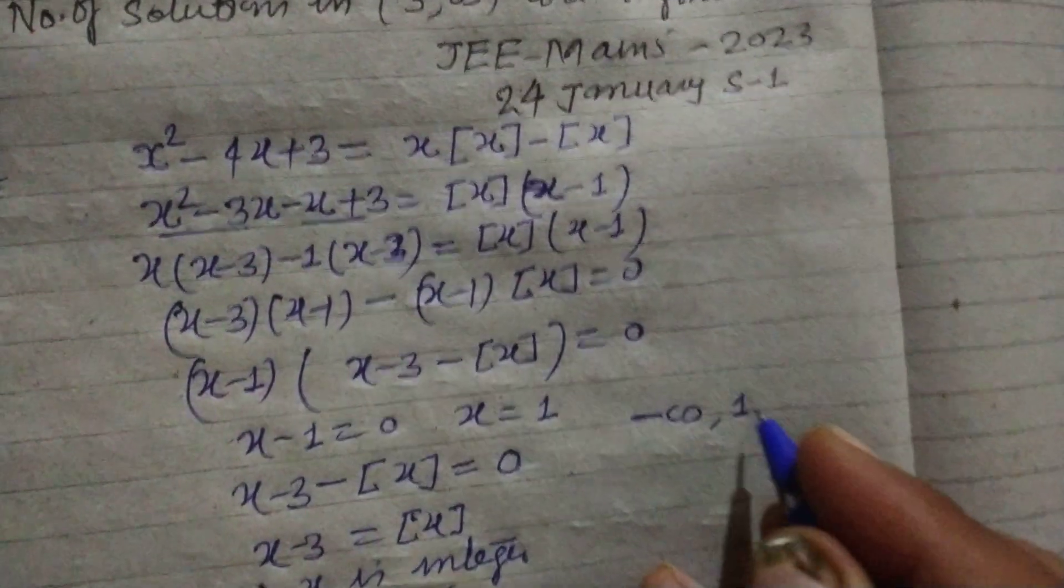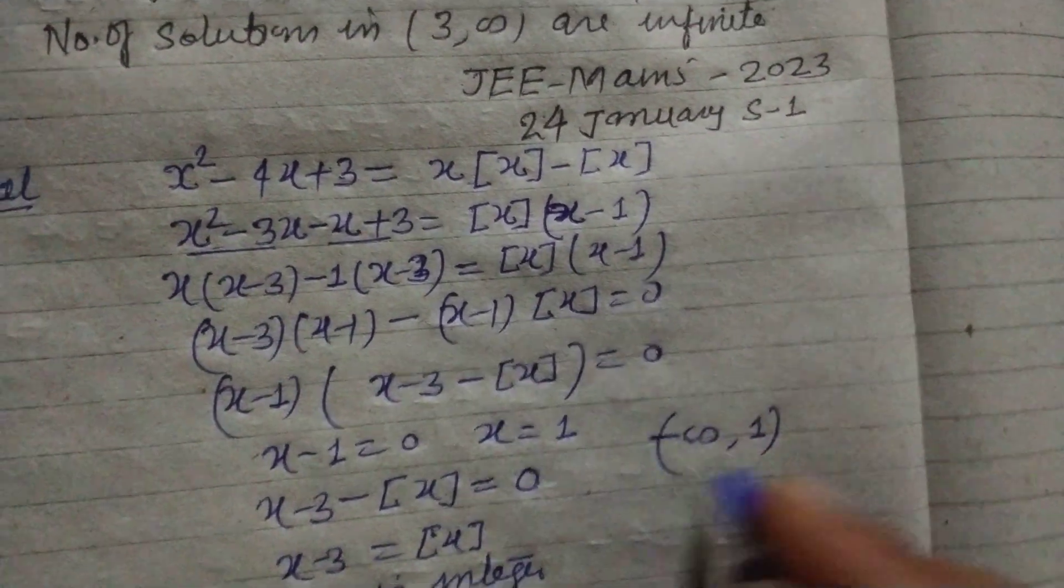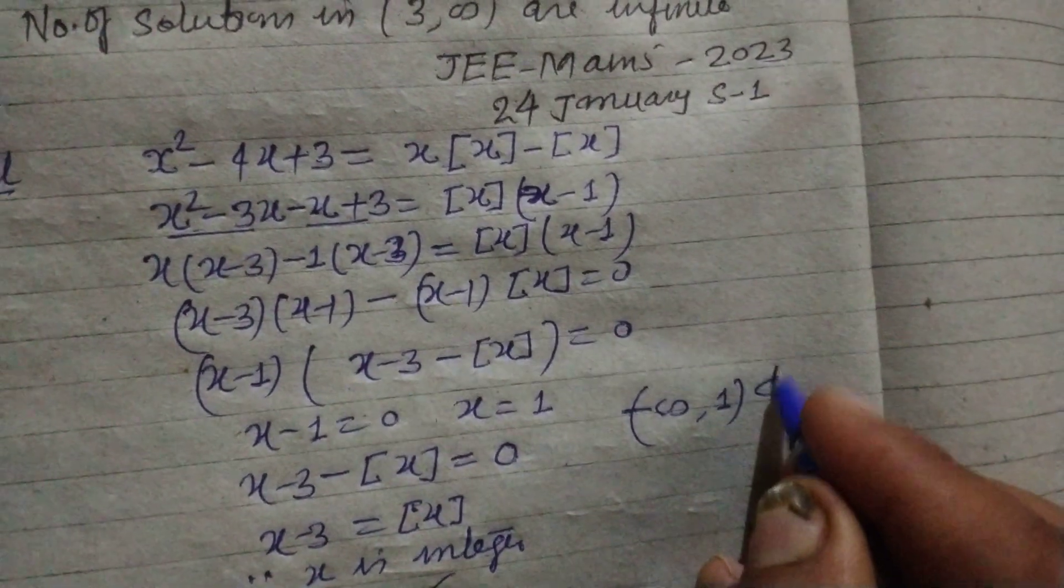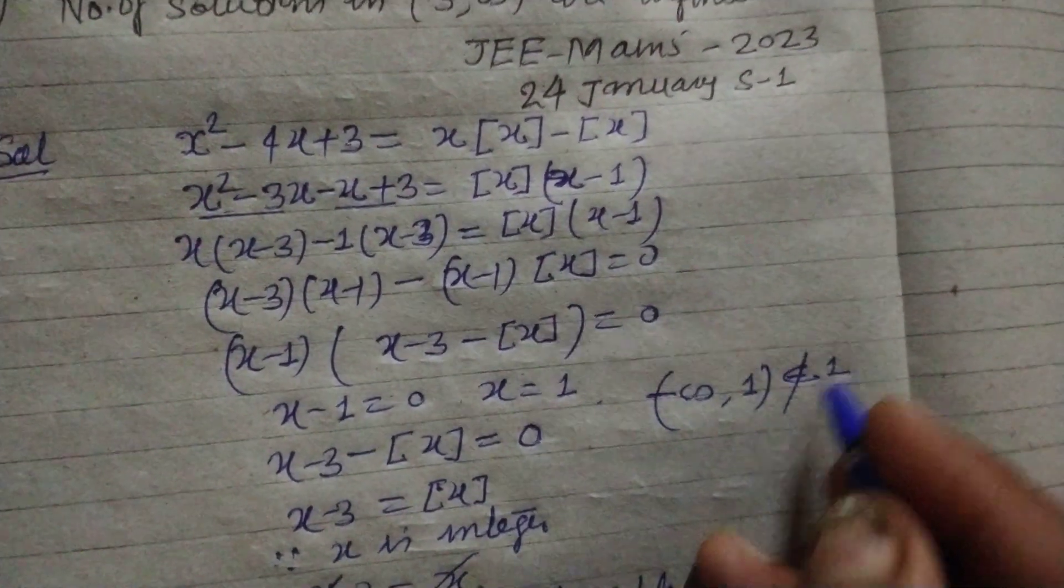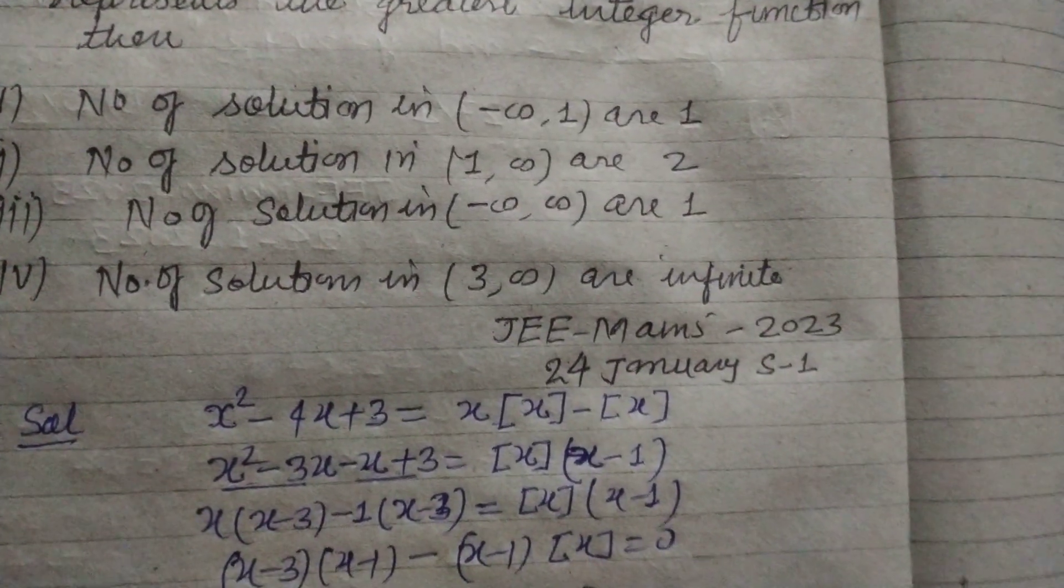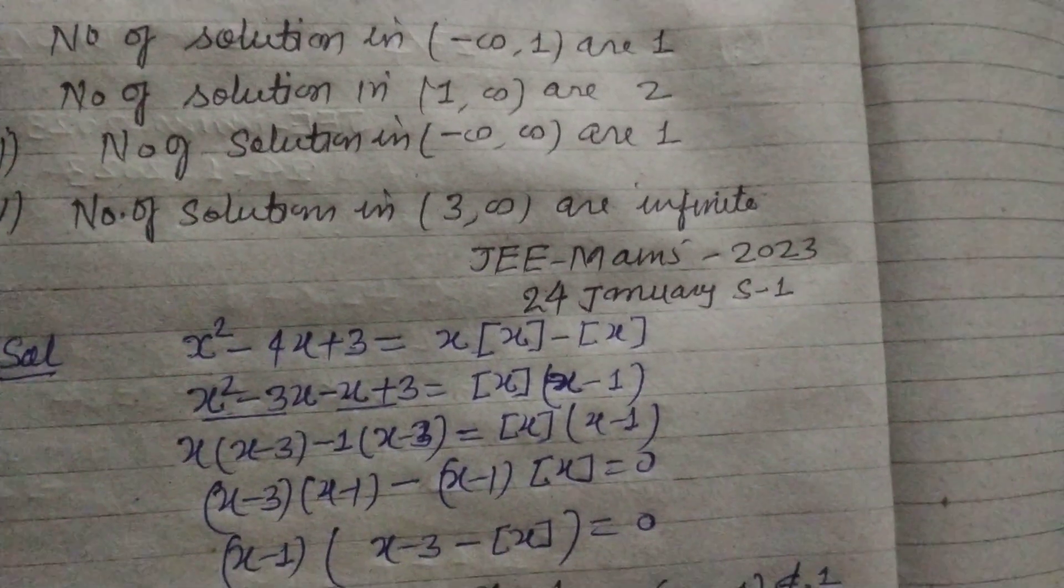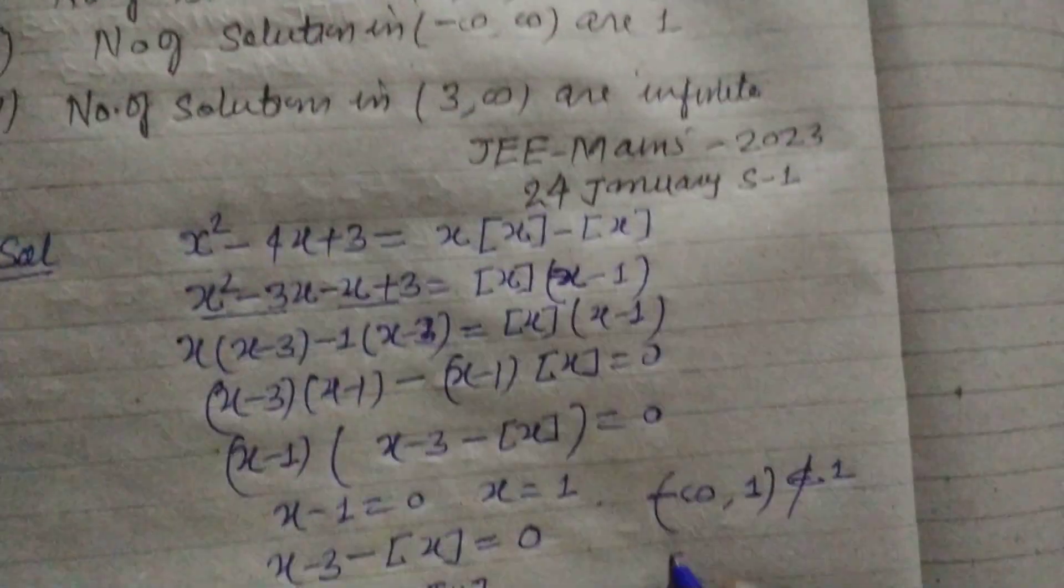Here, (-∞, 1) doesn't contain or doesn't belong to 1, because it is an open interval. So 1 is not in this interval. And in the second one,